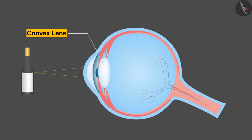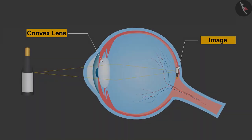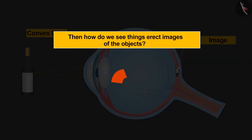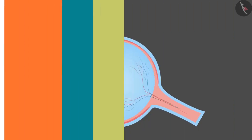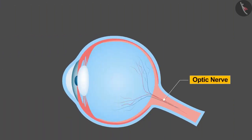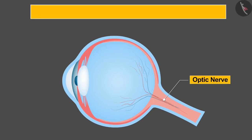Being a convex lens, always a real and inverted image is formed on the retina. Then how do we see erect images of the objects? From here the work of the brain begins, which is connected to the eye through the optic nerve. The brain converts a signal from the optic nerves and we see erect images.